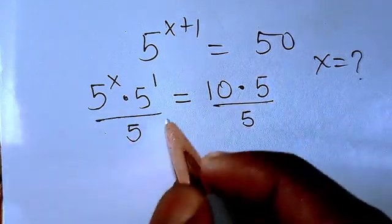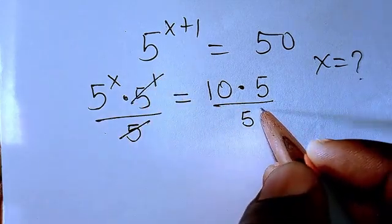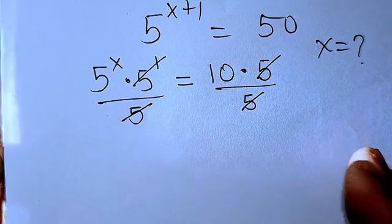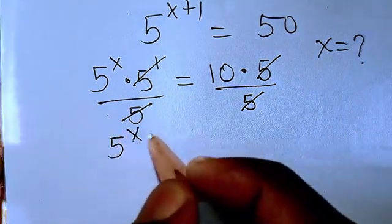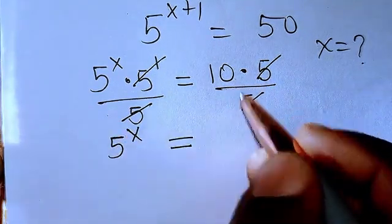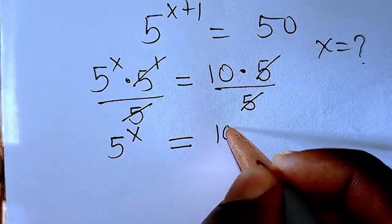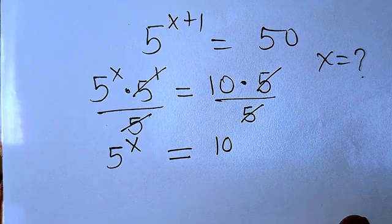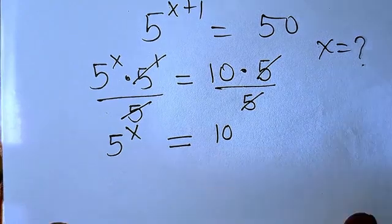We're going to have 5 to the power of x equals 10. It means that I reduced the equation to be this. So now from there the next thing is that I will try to take this x down here, and that means I'm going to introduce natural log to both sides.